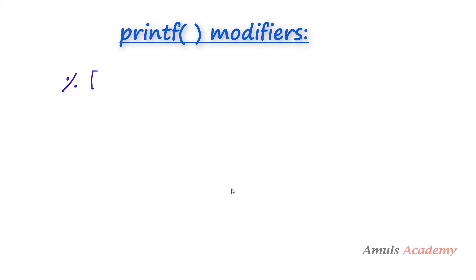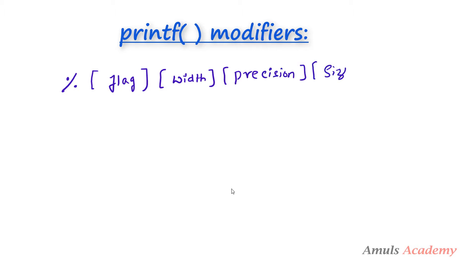The first modifier is called flag, the second one is called width, next is called precision, next is called size, and then we have the conversion character. In the previous tutorial we just wrote % and conversion character. Between these two we can use these 4 modifiers: flag, width, precision, and size.